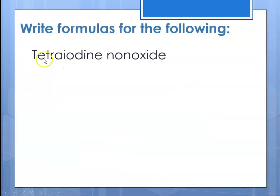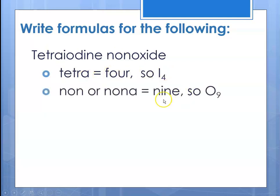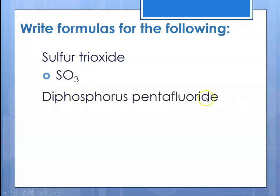To write formulas from names: tetraiodine nonaoxide — 'tetra' is 4 and 'nona' is 9, so that gives us I4O9. For sulfur trioxide, 'tri' is 3 and there's no prefix on sulfur so there's only 1, giving SO3. For diphosphorus pentafluoride, 'di' means 2 and 'penta' means 5, so P2F5. Remember that the prefixes are attached to the appropriate element.